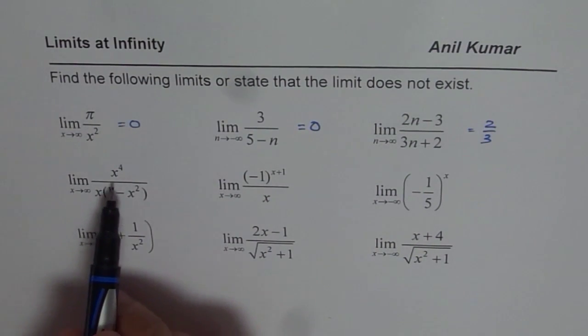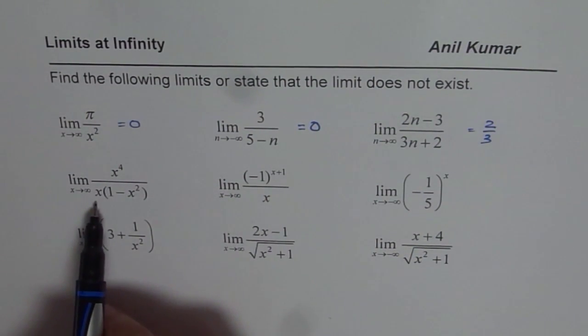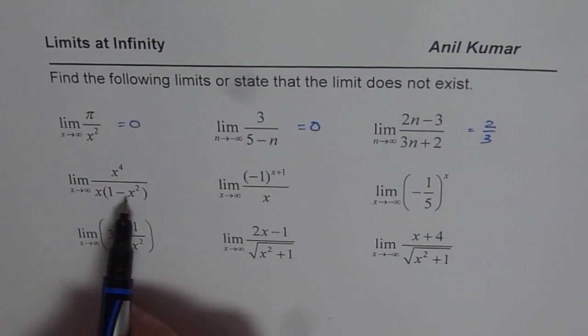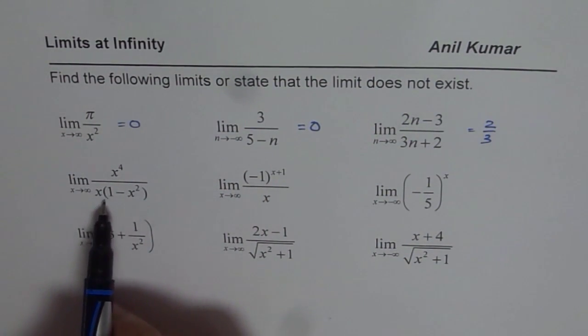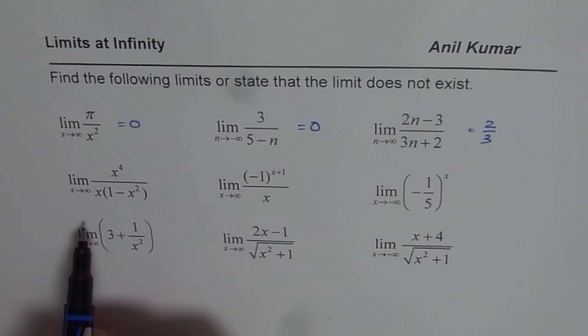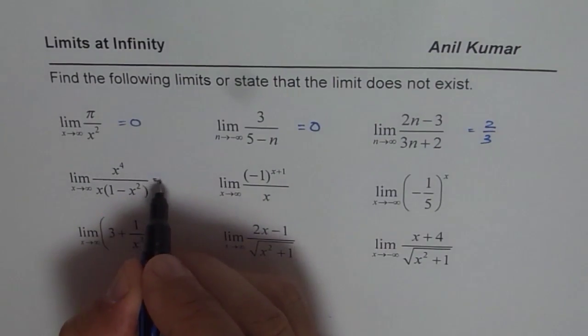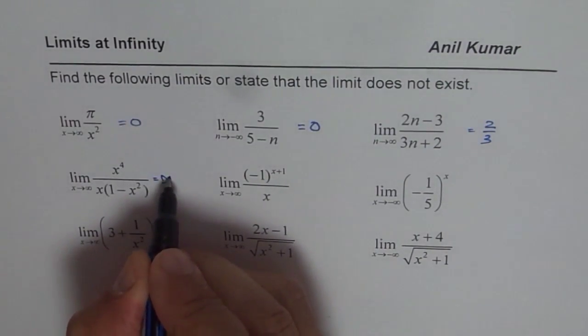For the next one, the numerator degree is 4. The denominator degree is x times x squared, which is 3. Since the numerator degree is much higher than the denominator degree, the limit does not exist in this case.